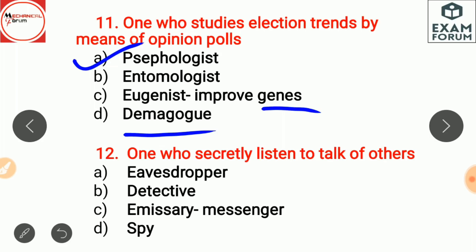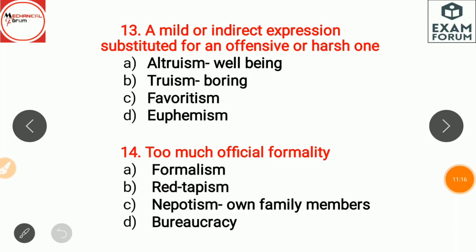One who secretly listens to the talk of others is an eavesdropper. A detective is someone who solves crimes. An emissary is a messenger sent to another country to perform a specific task. A spy is a person whose work is to get secret information about another person or country.